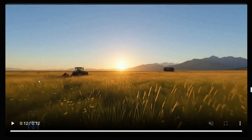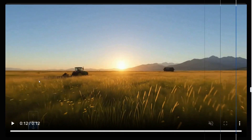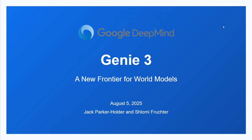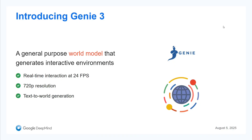I think we have seen enough demos. Now let's jump on to the technical details of the model. Google DeepMind has released Genie 3, a new frontier for world models. The key features are: real-time interaction at 25 FPS, 720-pixel resolution — that's the greatest part — and text-to-world generation. That means you give it a prompt and it is able to generate an interactive world out of it.